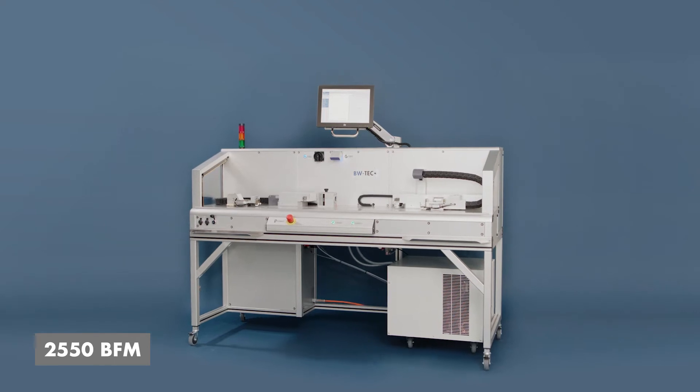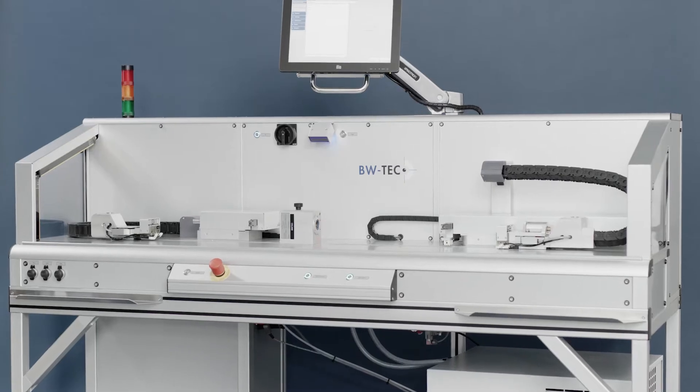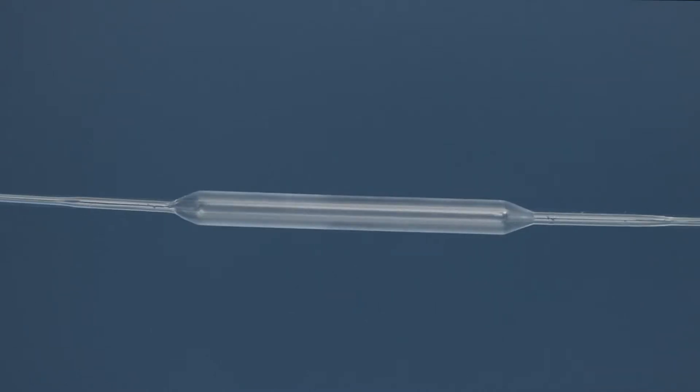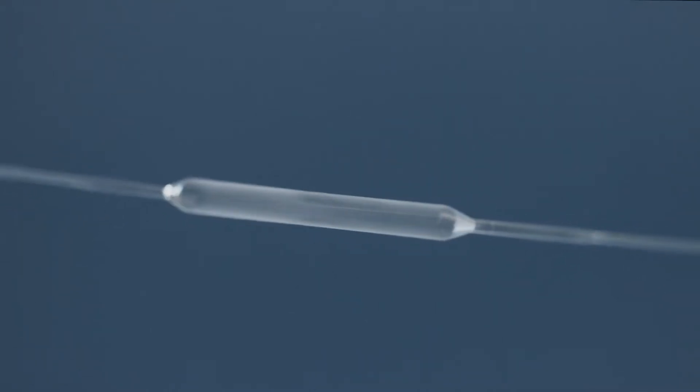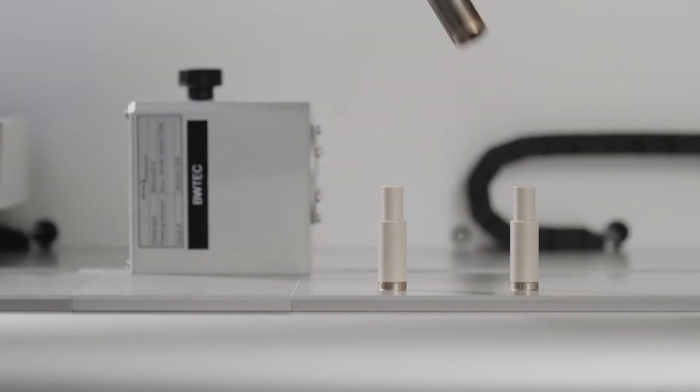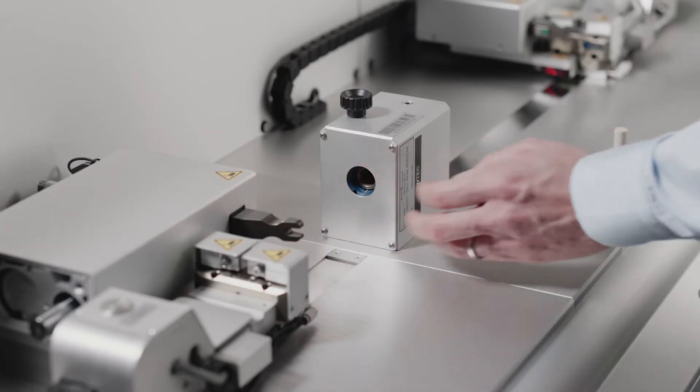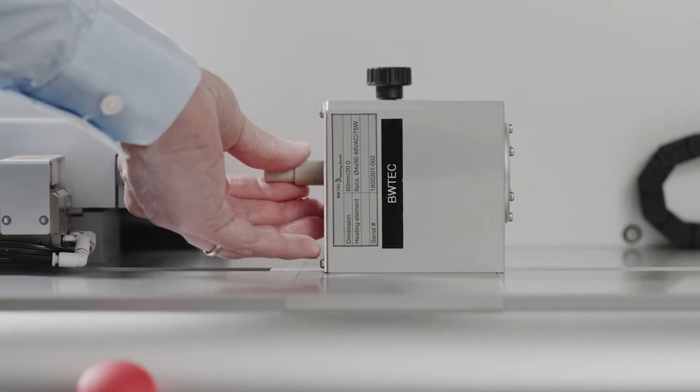The 2550 balloon forming machine is designed to produce a wide range of polymer balloons for angioplasty and other medical applications. The electrically heated stretch blow molding process enables the production of very accurate and repeatable high-quality balloons with tight tolerances in an extensive variety of sizes and shapes.